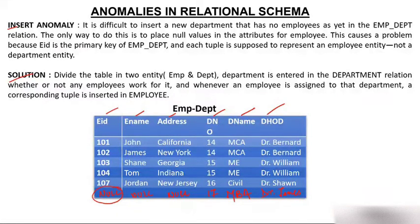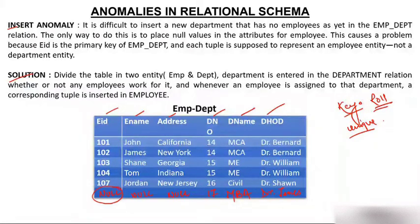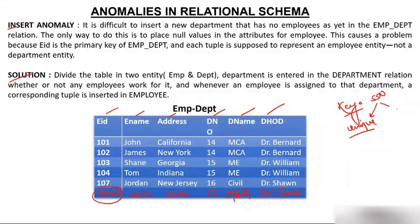The problem is: is it possible to keep employee ID as null? Key attributes are always unique — the employee ID of any two employees is never the same. Similarly, SSN (social security number) is always unique. Second, key attributes cannot be null. Employee ID can never be null — that's a fundamental property of primary keys.